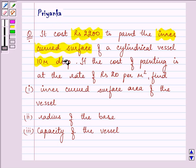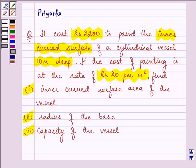a cylindrical vessel 10 meters deep. If the cost of painting is at the rate of rupees 20 per meter square, find first the inner curved surface area of the vessel, then the radius of the base and the capacity of the vessel.